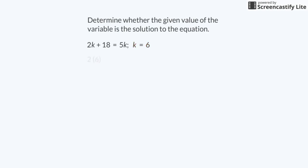This means we have 2 times 6 equals 12 on the left side of the equals sign and 5 times 6 on the right side. 2 times 6 equals 12. And 12 plus 18 equals 30. And 5 times 6 equals 30. 30 equals 30. So, k equals 6 is the solution.